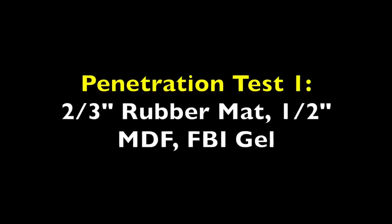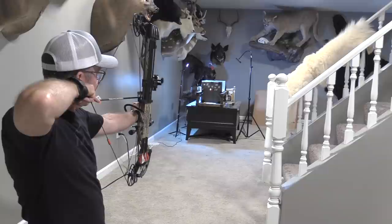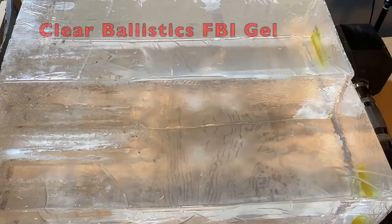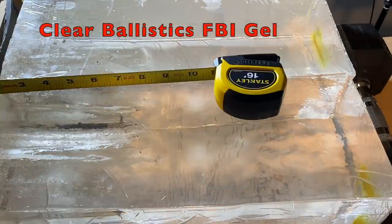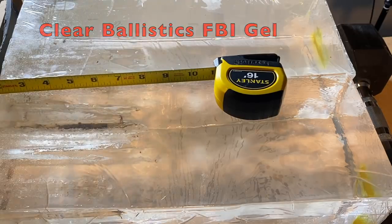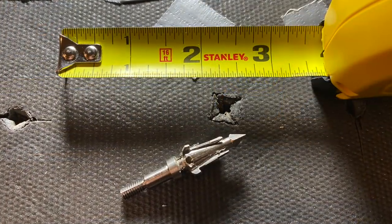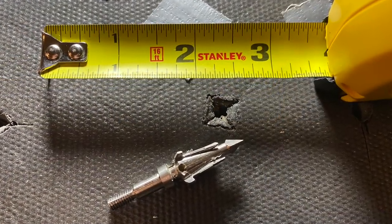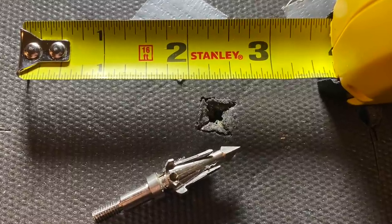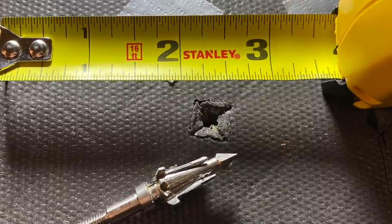It penetrated seven and three-quarter inches. Here's the entrance hole of the SWAT, and as you can see the blades don't open at all on impact, at least in this medium. But by the back of the rubber foam mat, after the MDF, by the time it hit the gel they were in their full open position and they stayed that way all the way through the penetration in the gel.